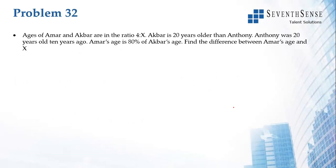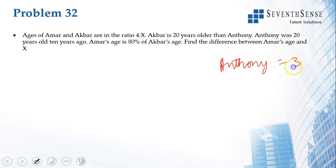Next question: Ages of Ammar and Akbar are in the ratio 4:x. Akbar is 20 years older than Anthony. Anthony was 20 years old 10 years ago, so Anthony currently is 30. Since Akbar is 20 years older than Anthony, Akbar is 50.